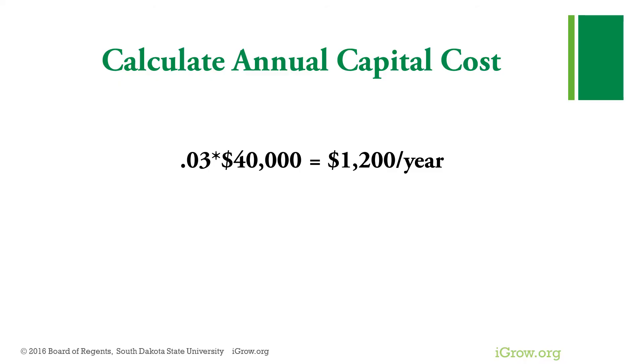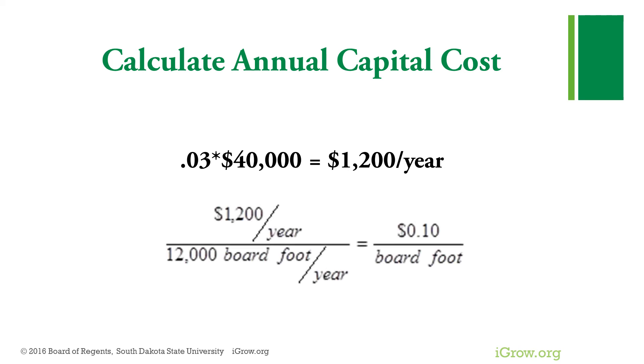Currently money in my savings account is making less than 1% interest, so it is appropriate to use an interest rate of 1% per year if you're in a like situation. Depreciation of sawmills — look online for a used sawmill — has been about 2% per year, so you could be using a capital cost of interest plus depreciation of as little as 3% of the total value. This amounts to an annual cost of 3% times $40,000, equals $1,200 per year. Dividing 12,000 board feet into $1,200 per year gives you 10 cents per board foot as your cost.